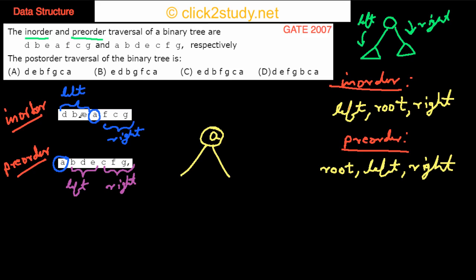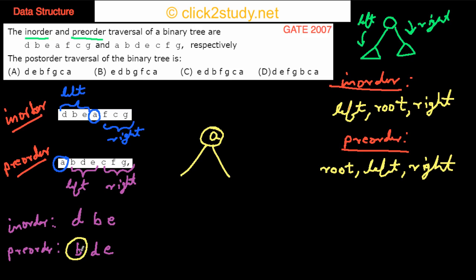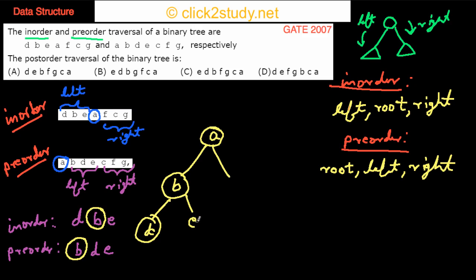For the left subtree, the in-order is D, B, E and the pre-order is B, D, E. The first term in pre-order gives the root, so the root is B. In in-order, that means D is on the left and E is on the right. So you can write B as the root, with D on the left and E on the right — the left subtree is done.